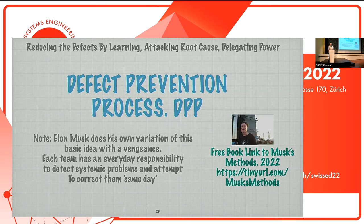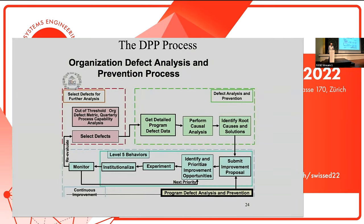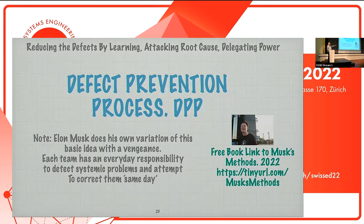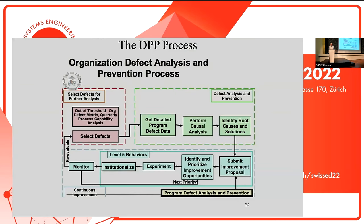I started about a year ago collecting things from videos and other places because Musk hasn't written his software engineering handbook yet. I've been collecting what he says on videos and things like that. If you want my Musk's Methods book, currently about 80 to 90 pages — there it is. There's also a little map of Raytheon using the defect prevention process.